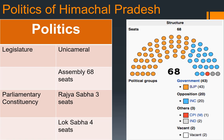Now the politics of Himachal Pradesh. Its legislature is Unicameral, meaning it has only an Assembly and not both Assembly and Council. Parliamentary constituencies include Rajya Sabha with 3 seats and Lok Sabha with 4 seats. The two major parties are BJP and INC, and the present Chief Minister Jairam Thakur is from BJP. On the image you can also see how the Legislature Assembly seats are divided.